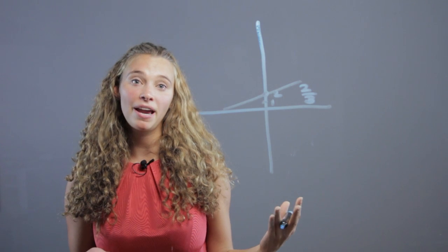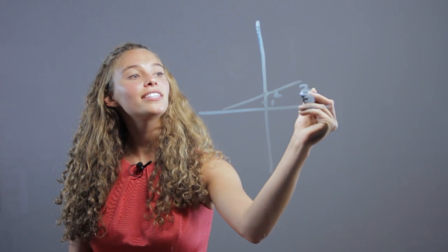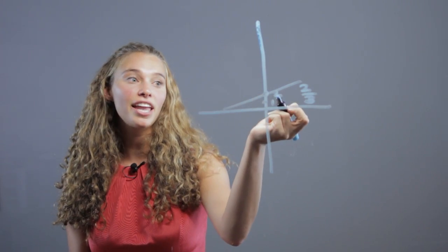and we want to do a line that's parallel to it. Well, a parallel line has the exact same slope, but completely different points, so it's going to have a different y-intercept.